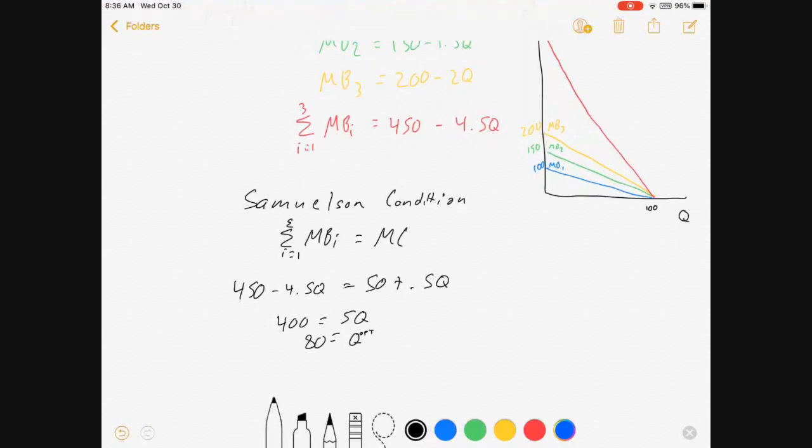So we've got an optimal quantity. Let's see what it looks like on the graph. We plot our marginal cost line. And we see at this point here, where marginal benefit equals marginal cost,